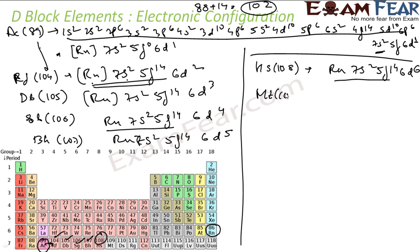Same thing for Meitnerium MT 109. Here again, 102 is taken care by these elements, and the remaining 7 will come here.